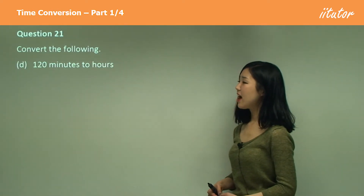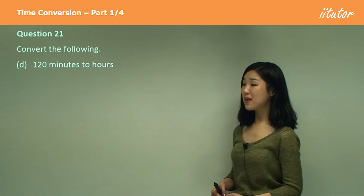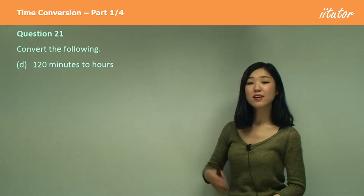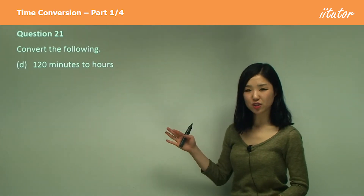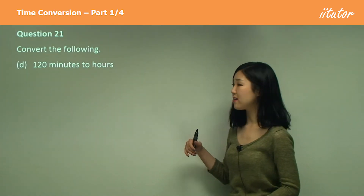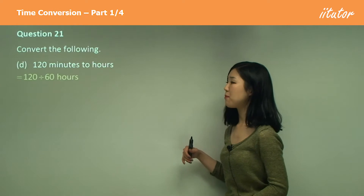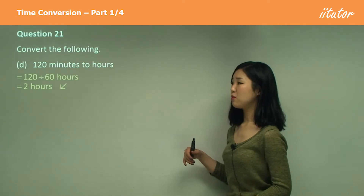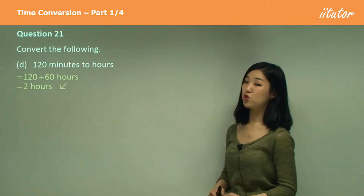D: 120 minutes to hours. Small to large conversion — we must divide. So we divide by 60, which becomes two hours.